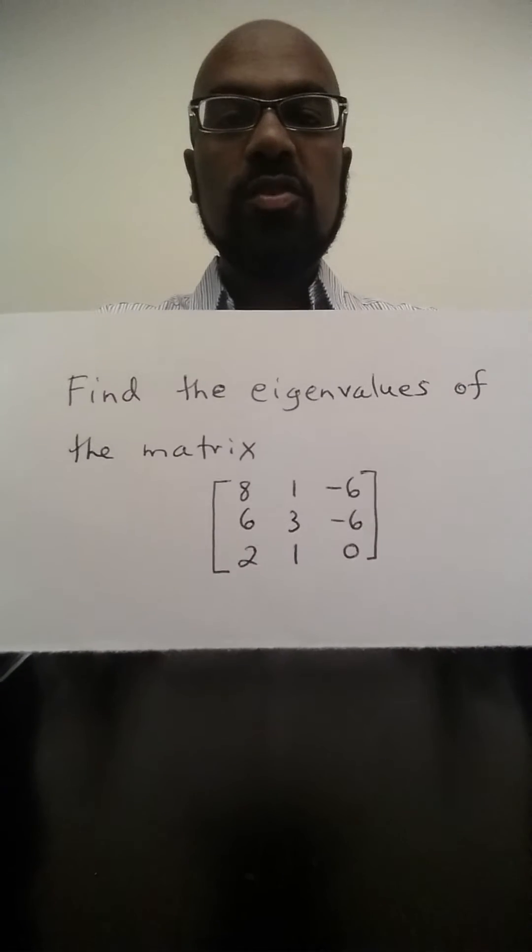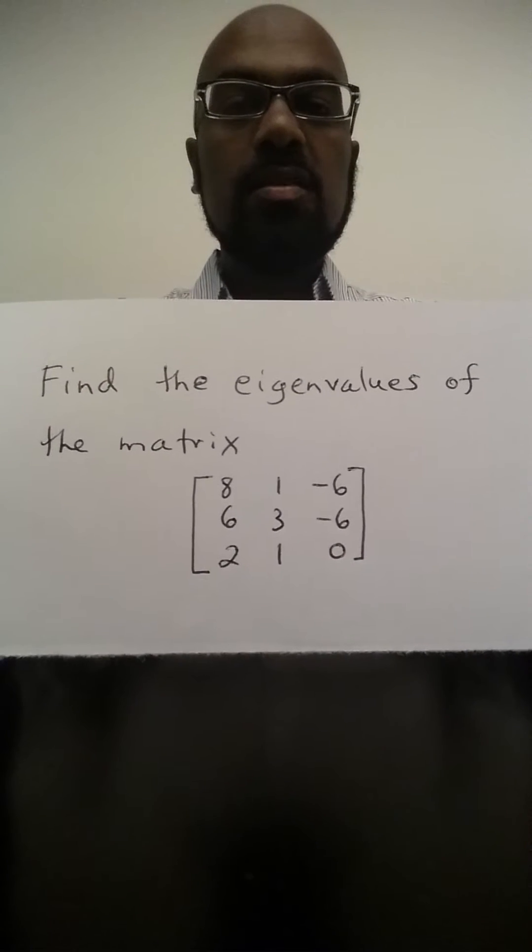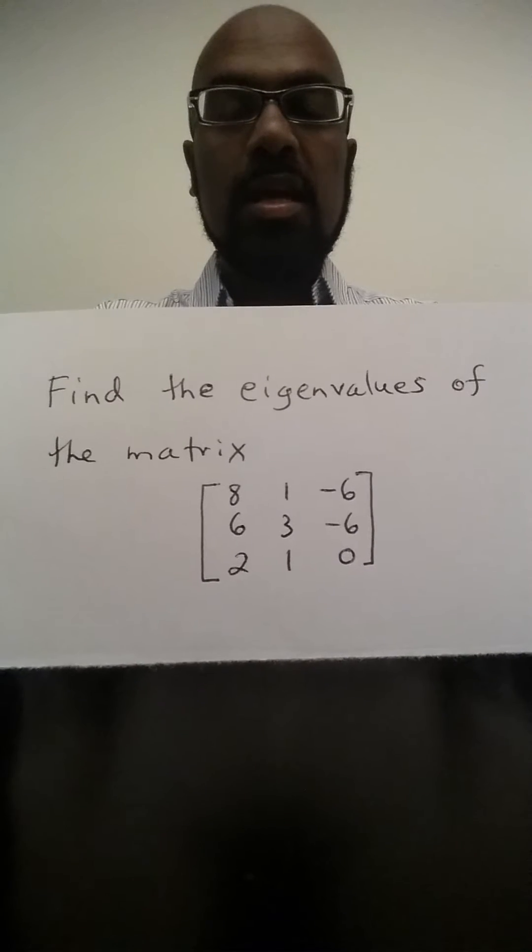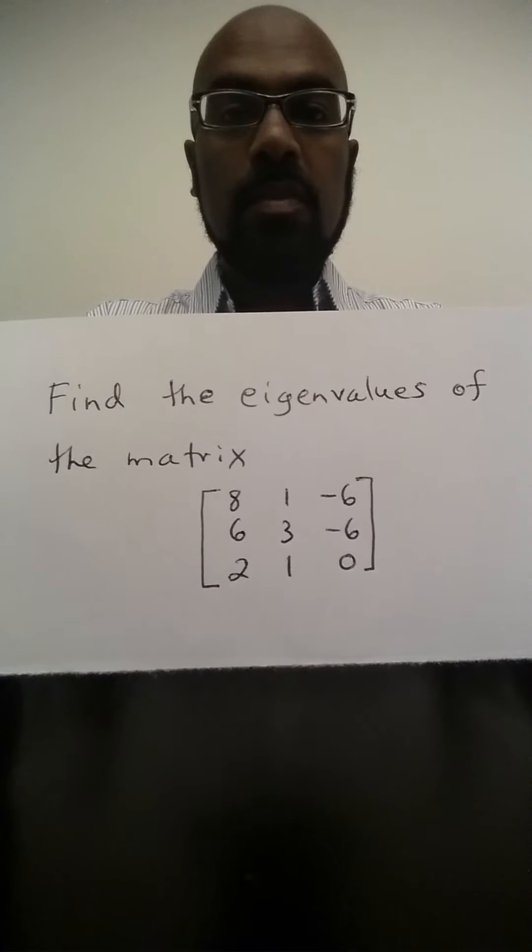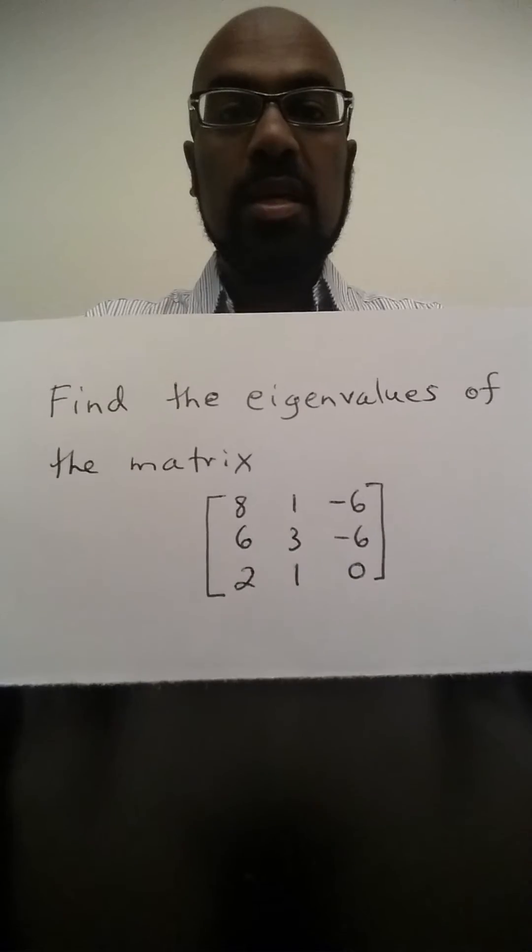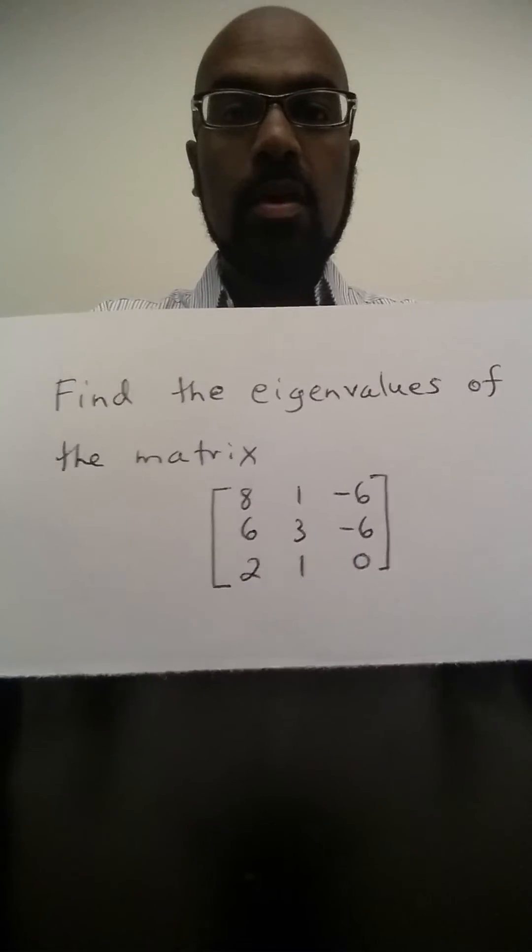Okay, so the first thing to notice about this matrix is the sum of the entries along any row is 3. That actually means that 3 is an eigenvalue. Why?